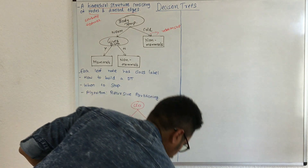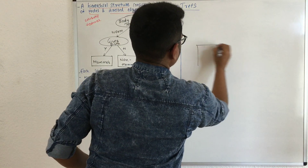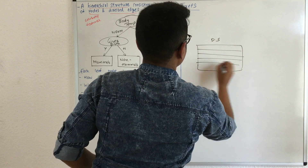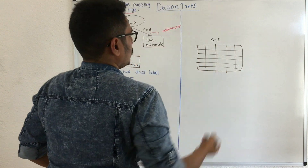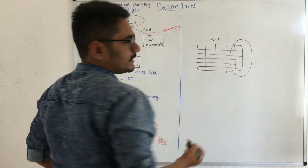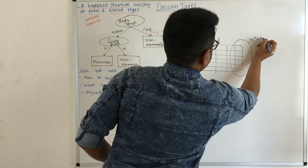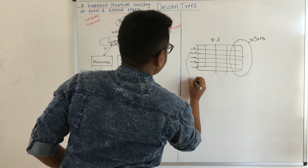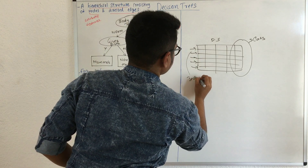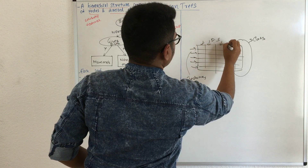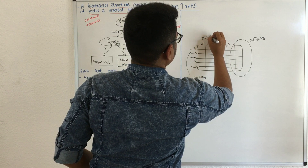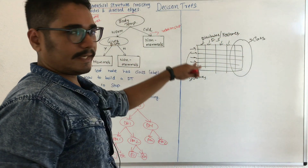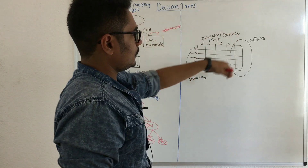Consider a dataset divided into n number of rows and n number of columns. The last column is called the class of the dataset, and the rows or tuples are called instances. The columns are called attributes or features. A dataset majorly consists of these elements.